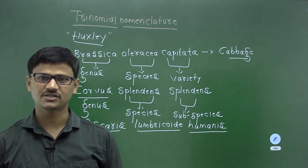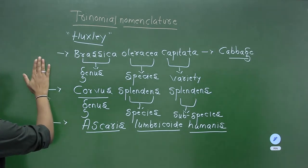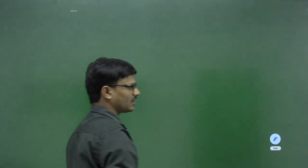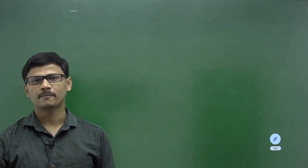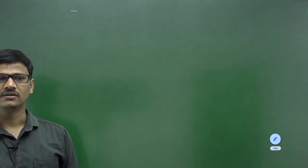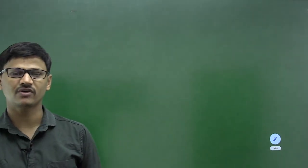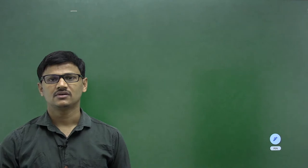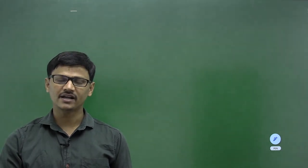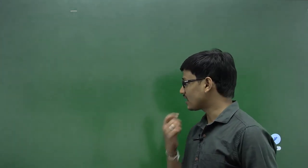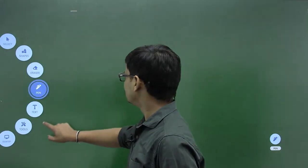To recall: nomenclature means naming of an organism with a scientific term. We particularly follow the rules and regulations of binomial nomenclature. In tomorrow's class we shall discuss taxonomy, which involves identification, naming, and classification of organisms. Before concluding today's class, we will look at some questions asked from this topic.